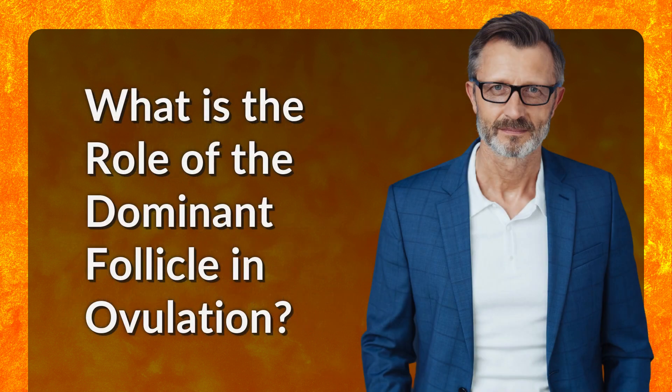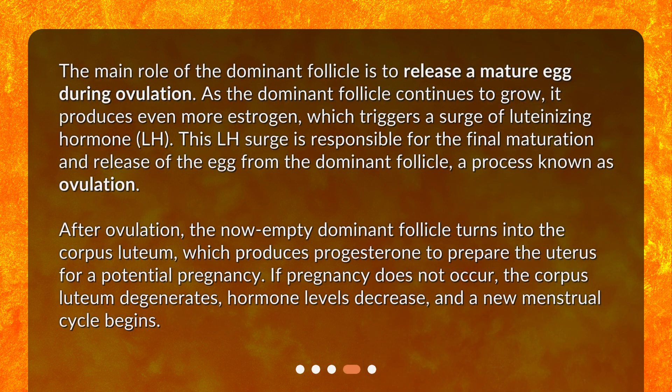What is the role of the dominant follicle in ovulation? The main role of the dominant follicle is to release a mature egg during ovulation. As the dominant follicle continues to grow, it produces even more estrogen, which triggers a surge of luteinizing hormone, LH. This LH surge is responsible for the final maturation and release of the egg from the dominant follicle, a process known as ovulation.